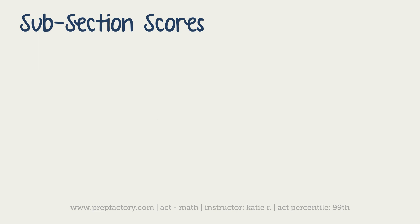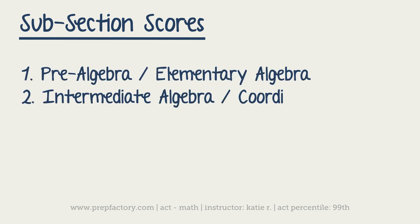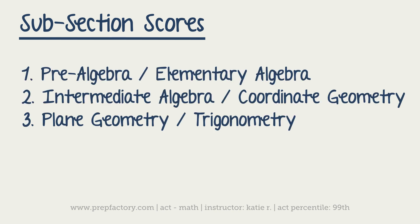Just like any other section, the math section is going to give you a composite score, which is the same as a scaled score. So you're going to get something from a 1 all the way up until a 36. But you also are going to have subsection scores where they break it down into little pieces.